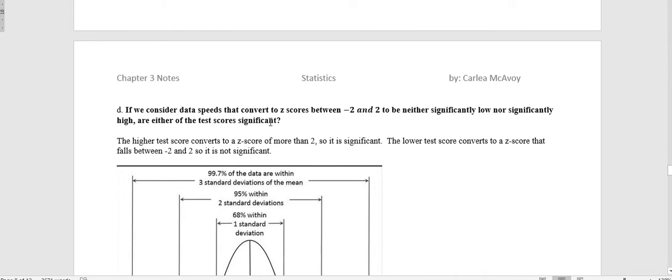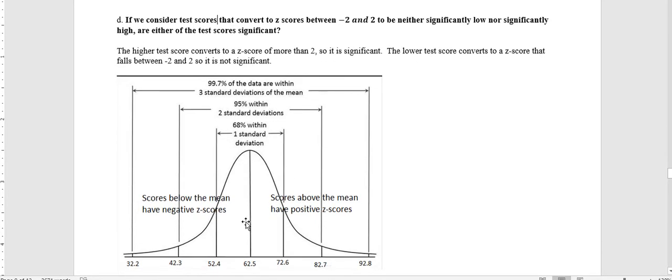If we consider the test scores that convert to z-scores between negative 2 and 2 to be neither significantly low nor significantly high, are either of these test scores significant? What we're saying is everything between negative 2 and positive 2 z-scores are not significant. They fall within that 95%, which is a pretty standard thing. If 95% of the scores fall between negative 2 and 2, then that score is not significant.